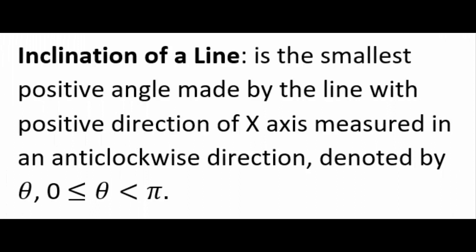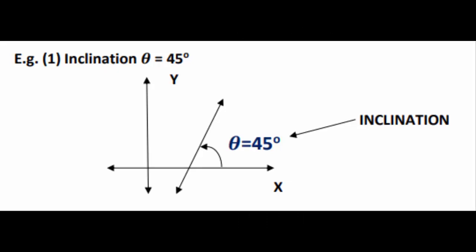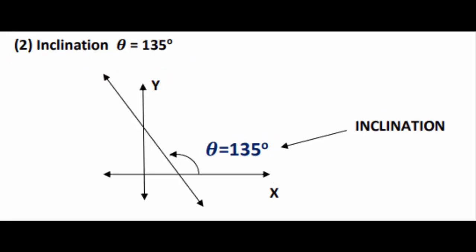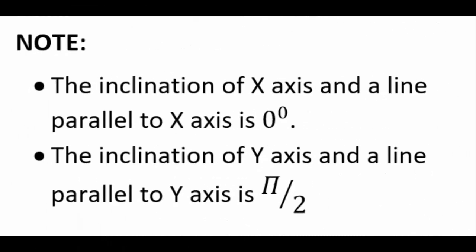Next is inclination. Inclination is the smallest positive angle that the line makes with the positive direction of the x-axis, denoted by theta. Theta could be acute or obtuse depending on how far the line is from the x-axis; the range for theta is between 0 and 180 degrees (0 inclusive). For the x-axis or any line parallel to it, inclination is always 0 degrees, whereas for the y-axis or any line parallel to it, the inclination is 90 degrees (pi/2).